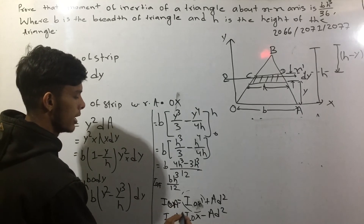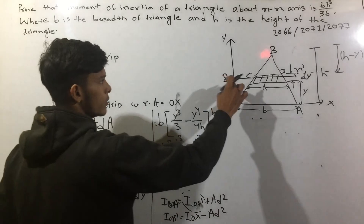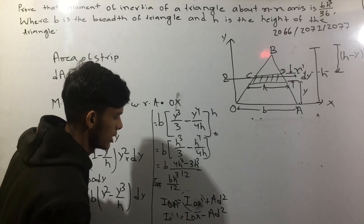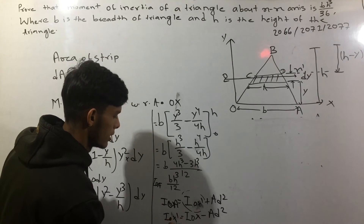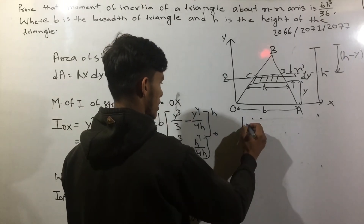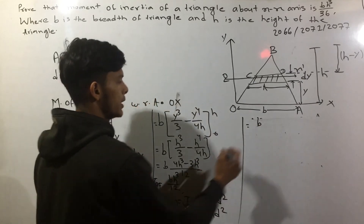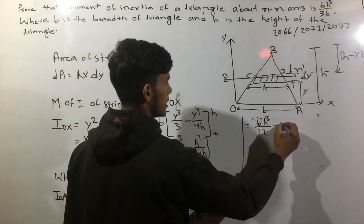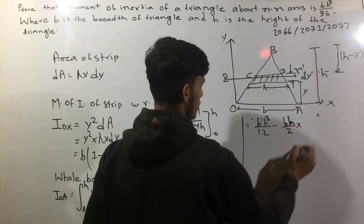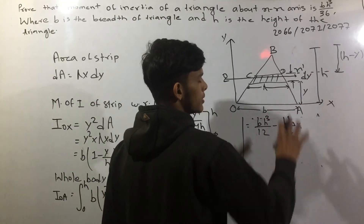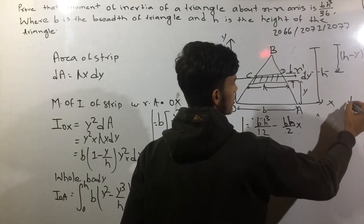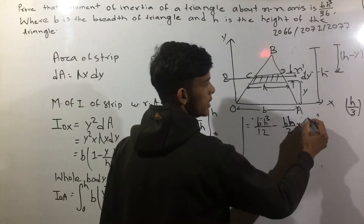I have to put the value of OA: d h cubed divided by 2L, and minus area of triangle — one-half base into height, one-half base into height into d squared. The centroid distance is h by 3, and here we have b squared h by 3.